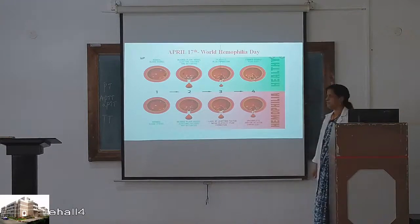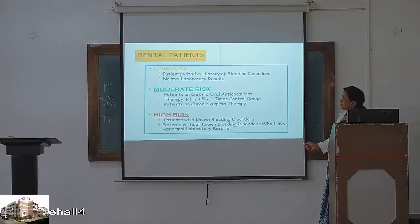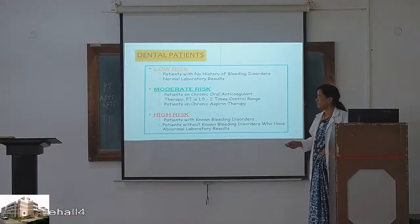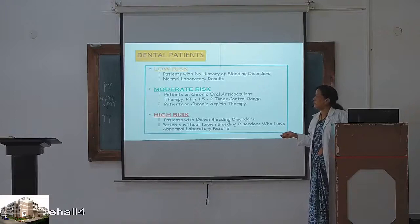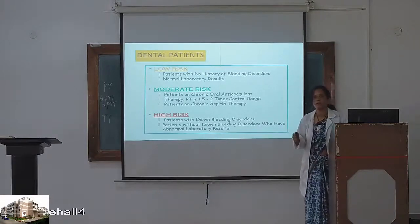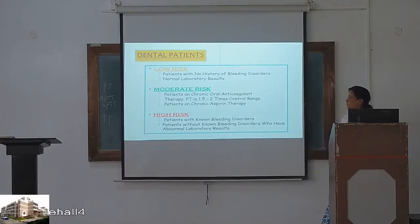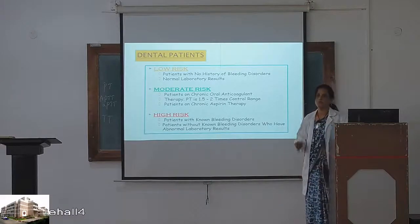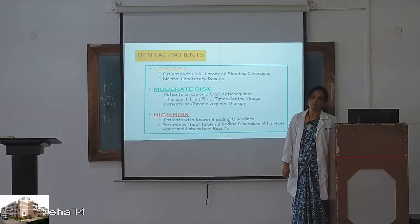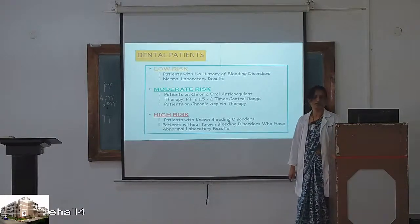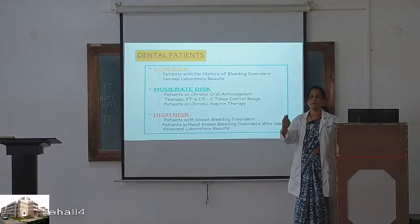Dental patients: low-risk patients have no history of bleeding disorders and normal laboratory results. Moderate-risk patients are on chronic anticoagulant therapy — please take the history and get prothrombin time done. Find out whether they are taking aspirin or any other anticoagulant therapy. High-risk patients are those with known bleeding disorders, or those without known disorders who have abnormal laboratory findings. Before any procedure, please get platelet count, bleeding time, and prothrombin time done.